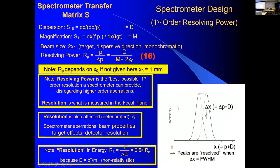This slide I can skip — Manuel has already explained resolving power. One more thing: the resolving power has no meaning without specifying the size of the object — the target spot. People often give a resolving power without saying which x₀ they refer to. If nothing is stated, usually one millimeter is assumed. But strictly speaking, you always need to say 'resolving power for a one-millimeter target spot' or similar. If you want to go into numbers, that is important.